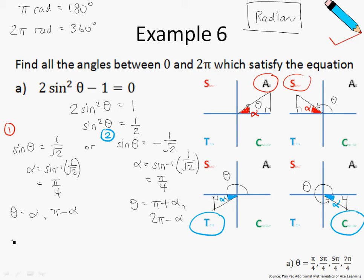So let me just do a summary on all the possible values of theta. So theta can be alpha, which is just π/4, or π minus alpha, which is π - π/4, or π plus alpha, or 2π minus alpha. And if you solve all of this, you just get π/4, 3π/4, 5π/4, and lastly, 7π/4. So these are the four values for theta.